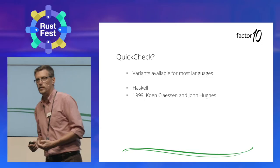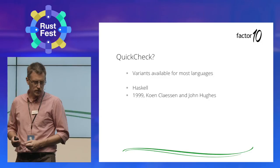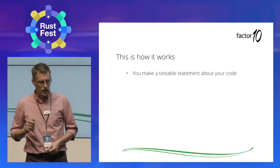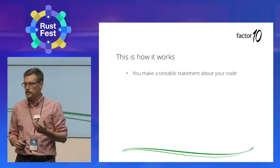John Hughes, if you remember, is the author of the classic paper 'Why Functional Programming Matters.' So they know what they're talking about. This is how QuickCheck works: you need to make a testable statement about your code.